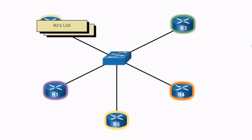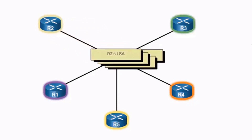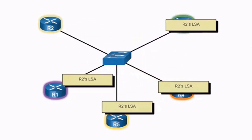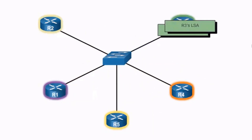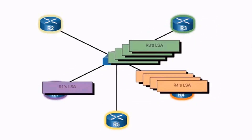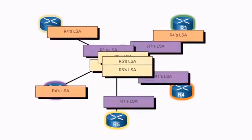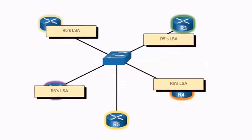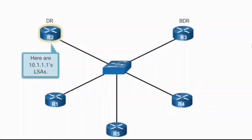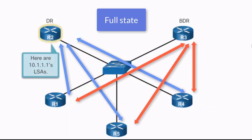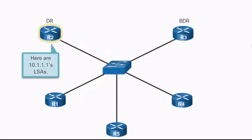For example, if R2 has a change, it sends out link state advertisements notifying all of its adjacent routers — all four other routers. Those routers then also notify all of their adjacencies. OSPF is doing its job correctly, but look at all the excessive LSAs where each router is notifying every other router. By having a DR and BDR elected inside a multi-access network, routers R1, R4, and R5 only maintain a full state with the DR and BDR, and only a two-way state with each other.